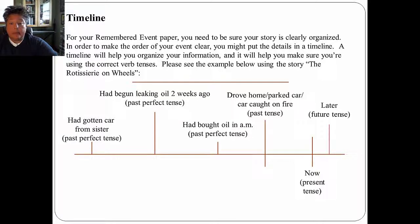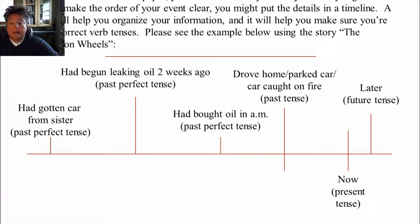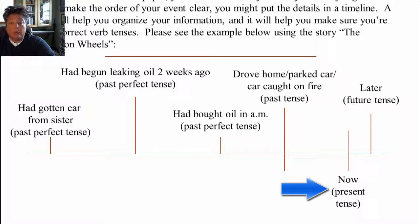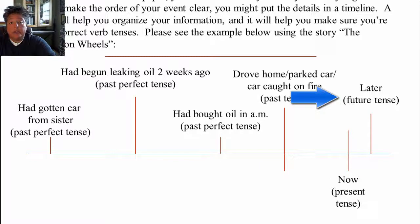Please see the example below using the story 'The Rotisserie on Wheels,' which is available on the class website. If you look at 'now' in the lower right-hand corner, you'll see that 'now' is in the present tense. If you talk about something after 'now,' you put that in the future tense — that's something that will happen, it has not happened yet. For all of the events you're going to be writing about, you'll want to use some form of the past tense, because you're talking about an event that happened in the past.